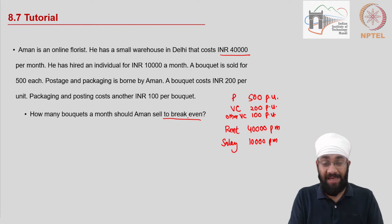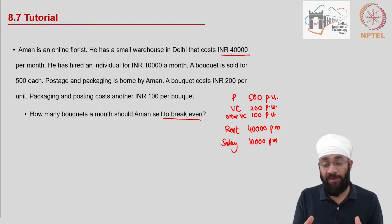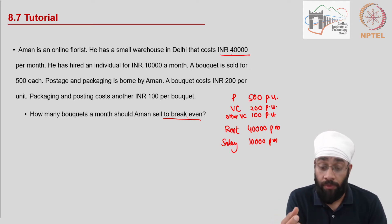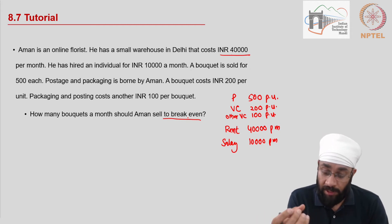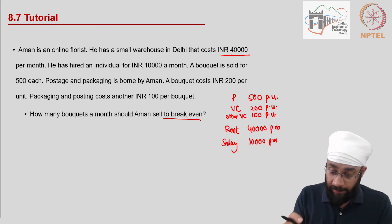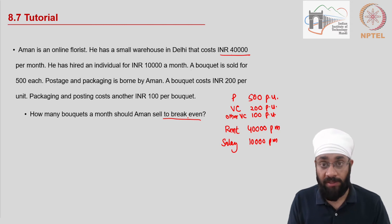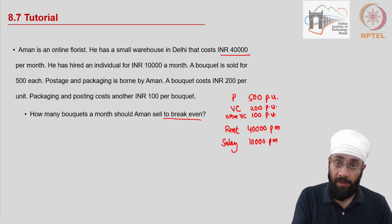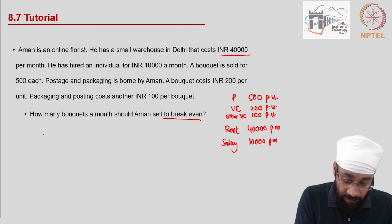The dynamics here are slightly different — we're asking how many bouquets per month to break even. This is true for small-value items and businesses where stock moves very quickly. So on a monthly basis, all the numbers we use now are going to be monthly.